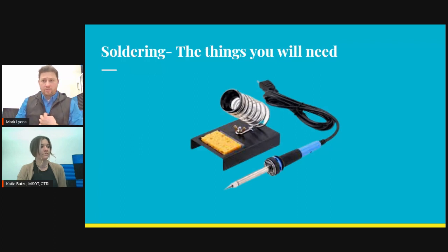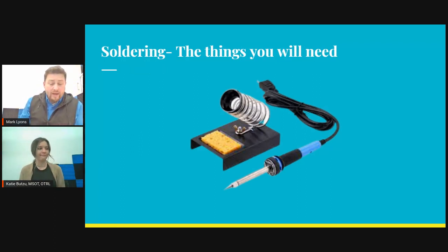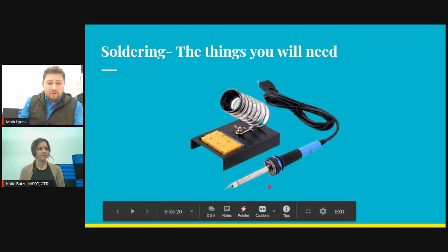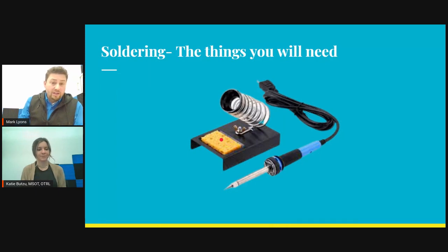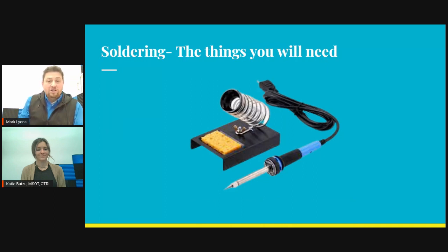This is a solder pen — they're pretty cheap, you can get them off of Amazon. Here's the pen; this is the part that heats up, you just plug it in. This is where the pen goes when it's hot. This is just a sponge — you get the sponge wet and that's how you clean it off. The skill of soldering is just to do it and practice it. There's no way — you can watch 100 videos, but until you actually really do it, that's when you get good at it.